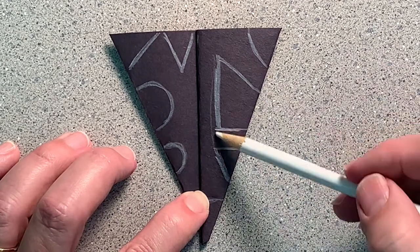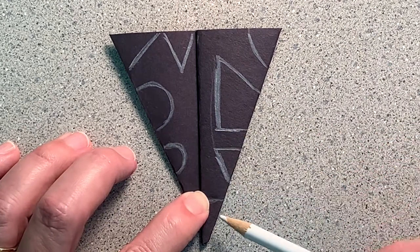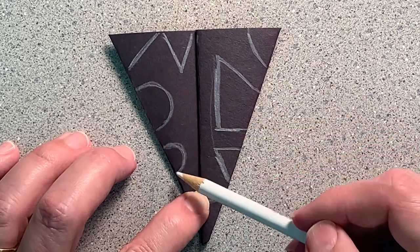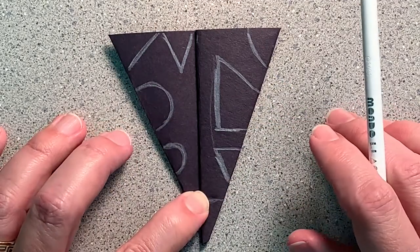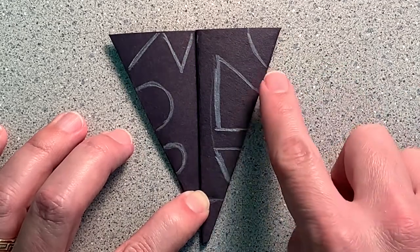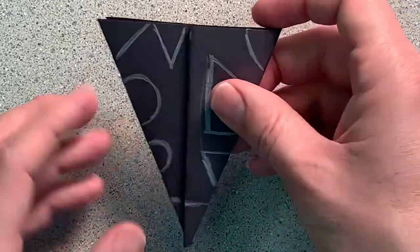You guys can make different lines if you want, different shapes. Just keep in mind, you don't want to cut off all of the edge where it's folded. If you do that, the snowflake will fall apart. Now that I have everything drawn, I'm going to take my scissors and I'm going to cut along all of the lines that I just drew.